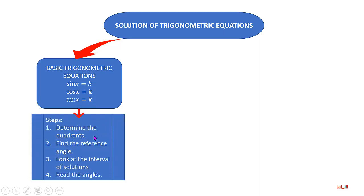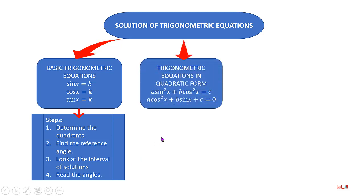To solve these equations, we have to follow a few steps in order to get all the solutions in the given interval. First, determine the quadrant in which the trigonometric ratio is located. Second, find the reference angle. Third, look at the interval of solutions, and finally read the value of all the angles.